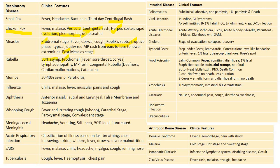Rubella: 50% of infections will be asymptomatic. Stages include a prodromal phase, then a stage with lymphadenopathy and maculopapular rash. The prodromal phase is associated with fever, sore throat, and coryza. For congenital rubella, the triad is deafness, cardiac malformations, and cataracts. When it affects pregnant mothers, 30 to 40% will be asymptomatic.